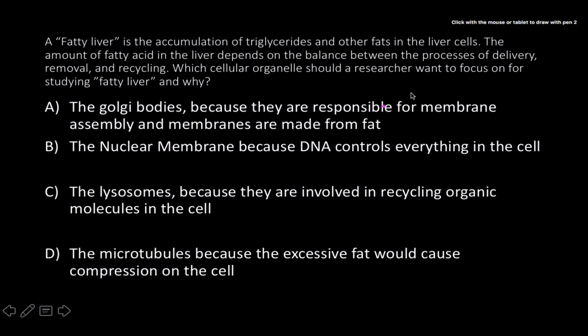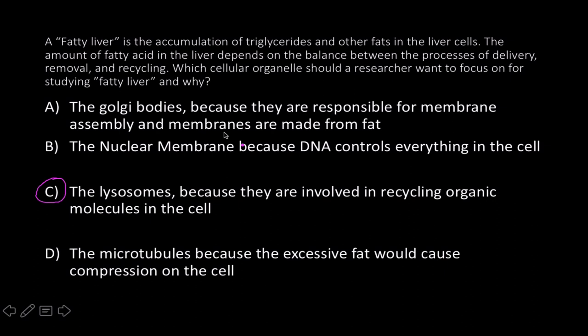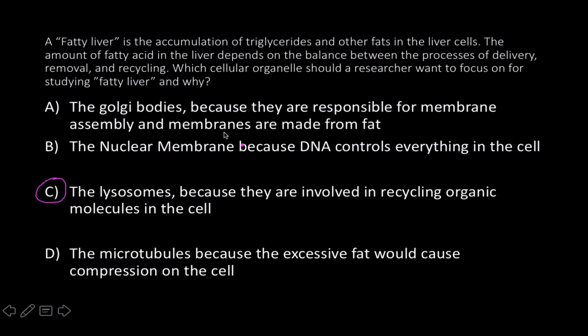The blood-brain barrier prevents systemic blood circulation from reaching the central nervous system — which junction most likely explains why nervous tissue and blood never directly mix? The answer is C, tight junctions. Last question: a fatty liver is the accumulation of triglycerides and other fats in liver cells — which cellular organelle should a researcher focus on for studying fatty liver? The answer is C, the lysosomes — the word 'recycling' in the question should give it away. And all of the following are part of the cytoskeleton except D — there is no such thing as a protein called myokin.